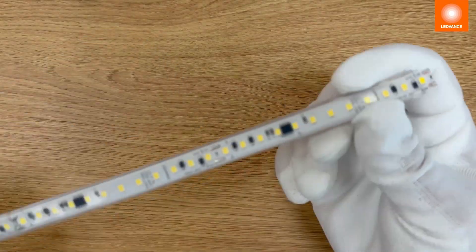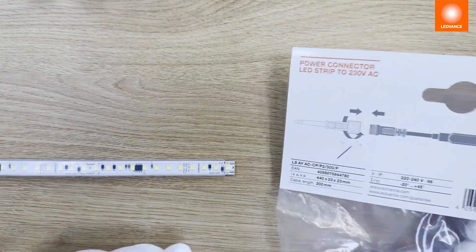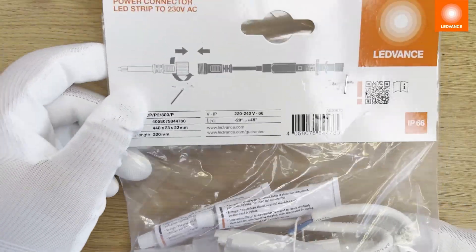Now the strip is prepared to connect to the power connector. The power connector accessory bag contains all necessary parts.